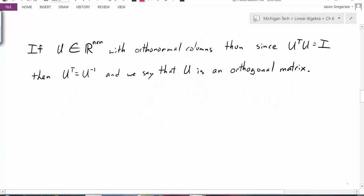Now, if we think of U as not being an M by N, but rather an N by N, so U is in the set of all N by N matrices, and it has orthonormal columns, then we've already seen that we can take U transpose times U to equal identity. But because U is now N by N, that's the same thing as saying that U transpose is equal to U inverse. And if that's the case, then we will call U an orthogonal matrix. So this is the definition of being an orthogonal matrix.